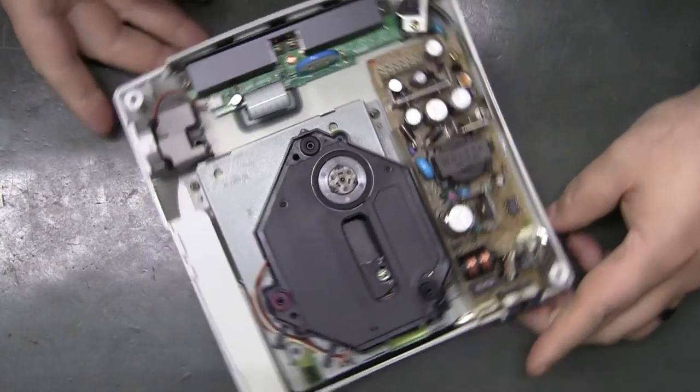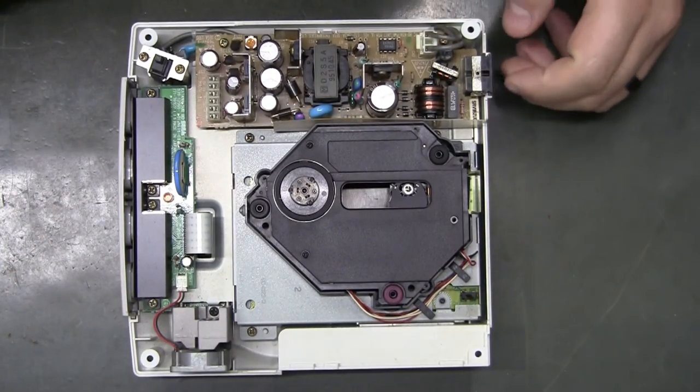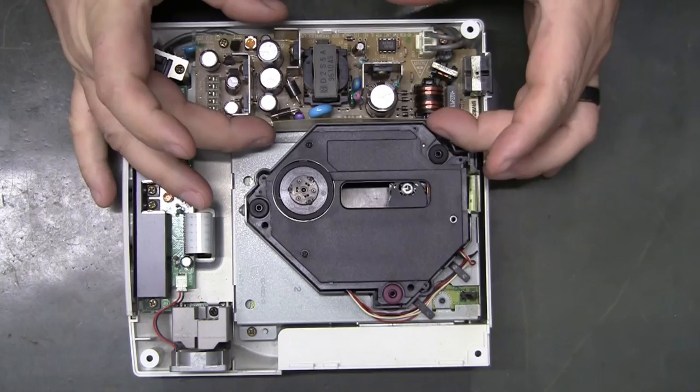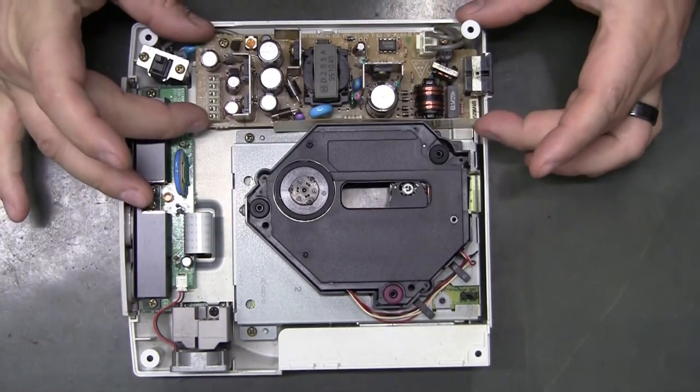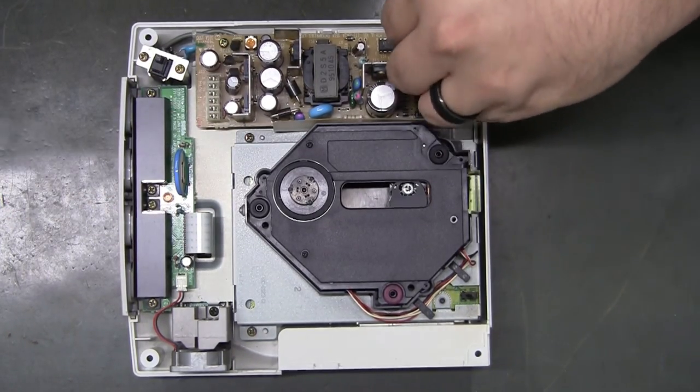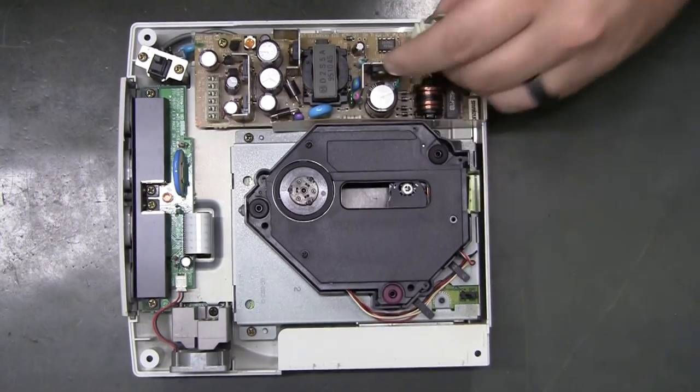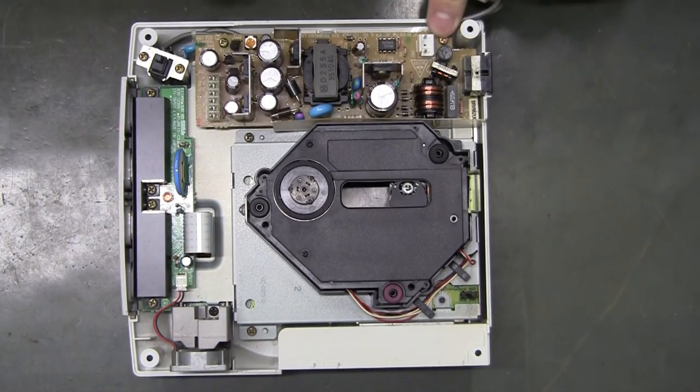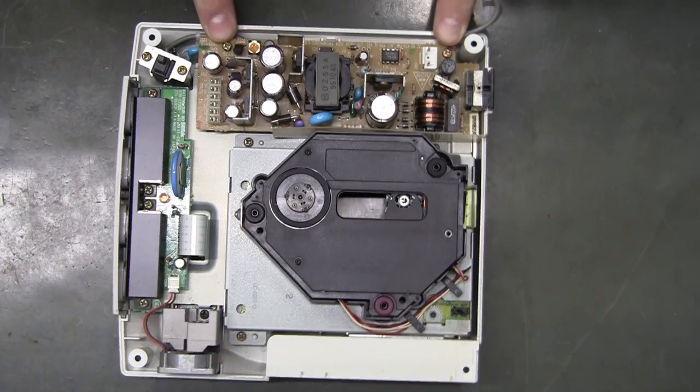And this is about as far down as you actually need to take it to do this because we're just replacing the actual power supply. So there's two screws. You can unclip your power switch lead right there. And then here are the two screws.